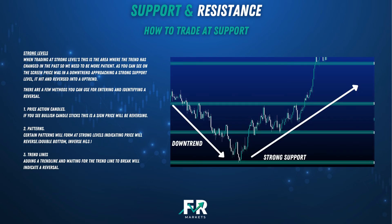How to trade at support at a strong level: when trading at strong levels this is the area where the trend has changed in the past, so we need to be more patient. As you can see on the screen, price is in a downtrend approaching a strong support level — it hit and reversed into an uptrend. There are a few methods for entering and identifying a reversal: 1. Price action candles — if you see bullish candlesticks this is a sign price will be reversing. 2. Patterns — certain patterns will form at strong levels indicating price will reverse, such as a double bottom or inverse head and shoulders. Don't worry, we will be going through patterns in another lesson.